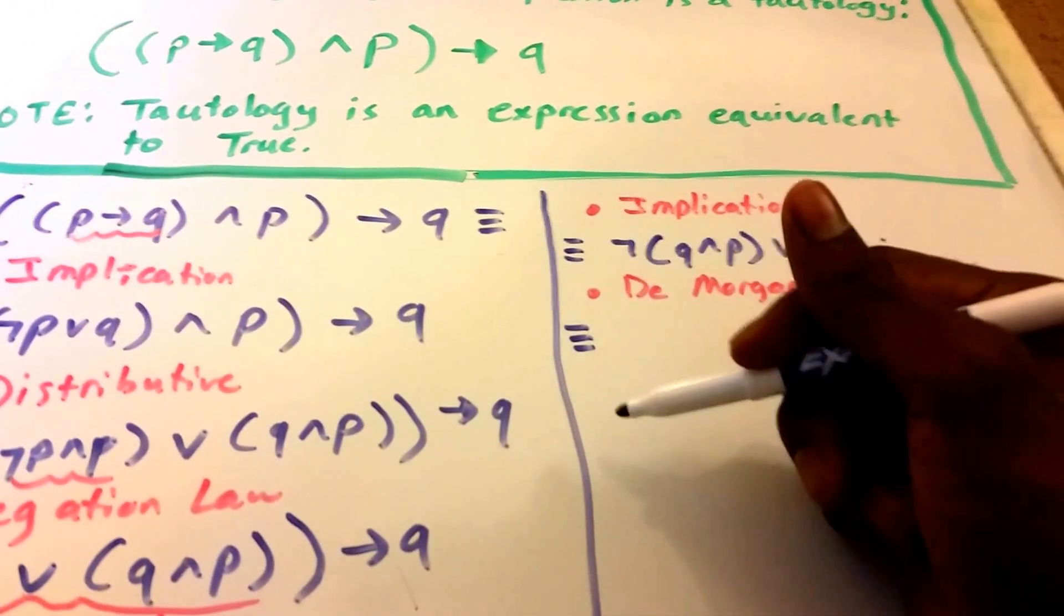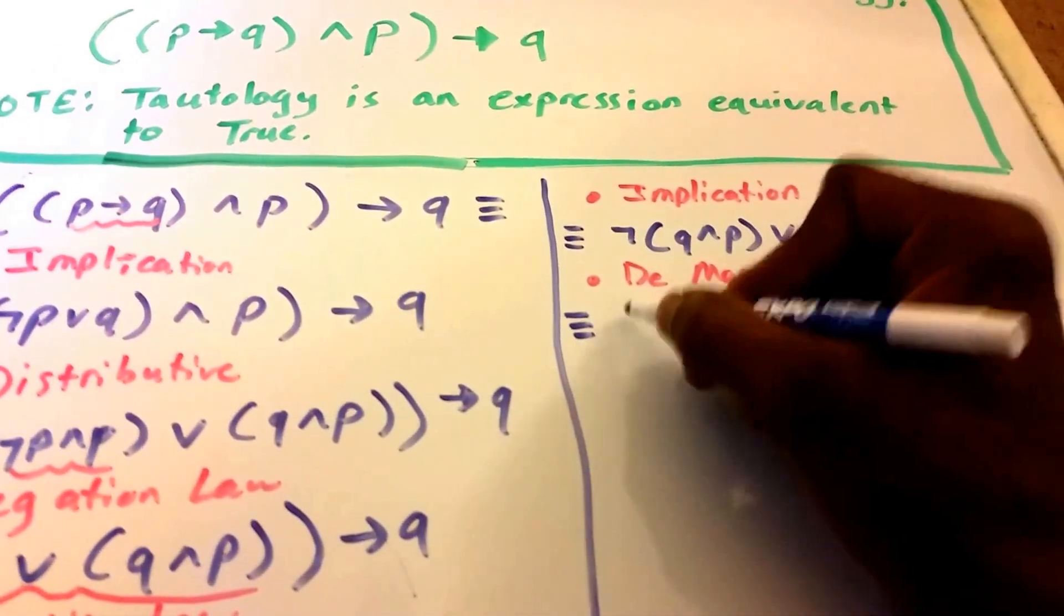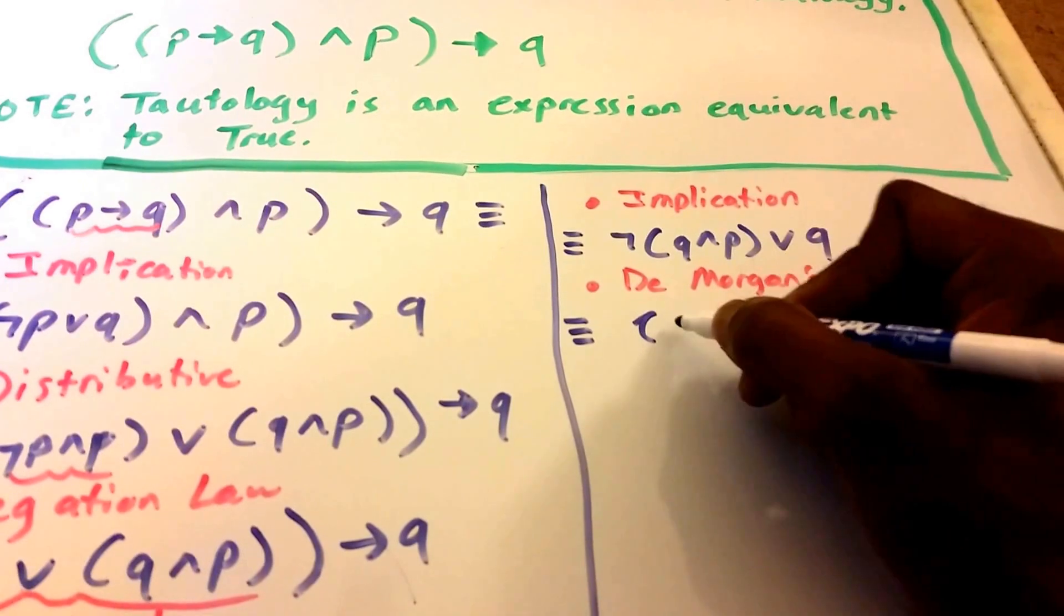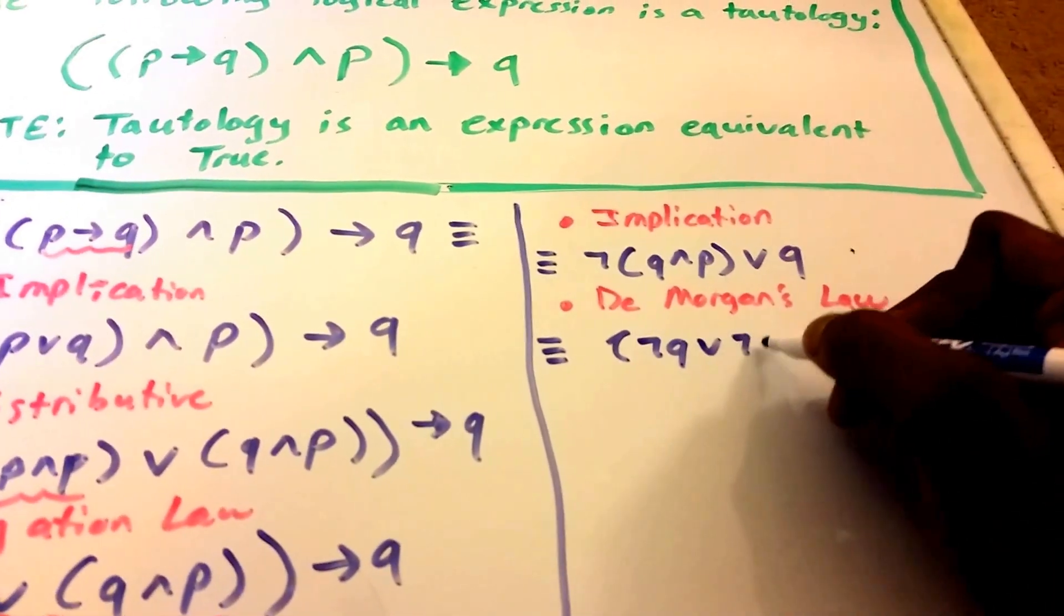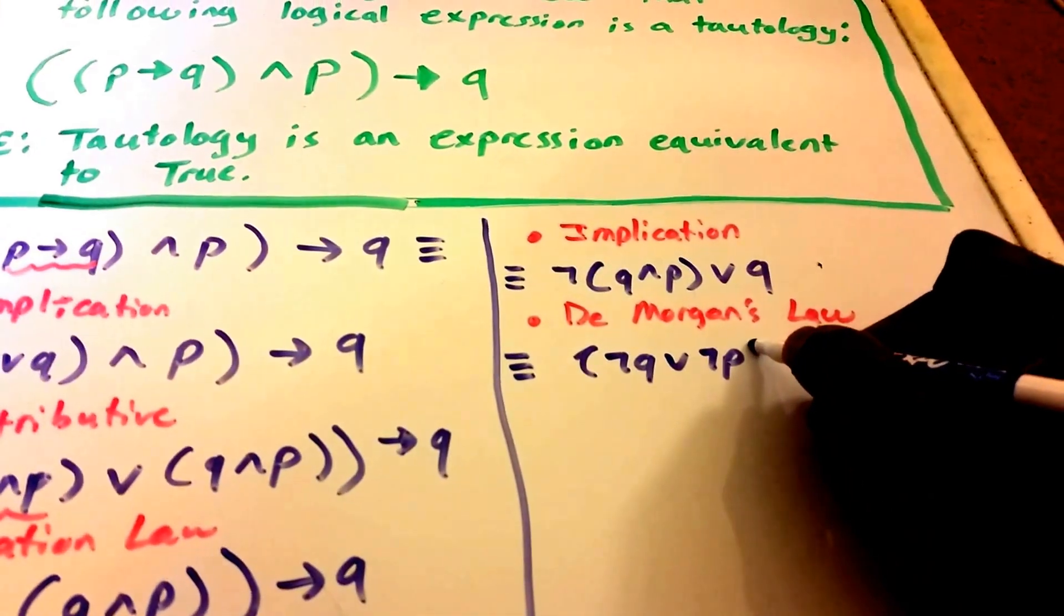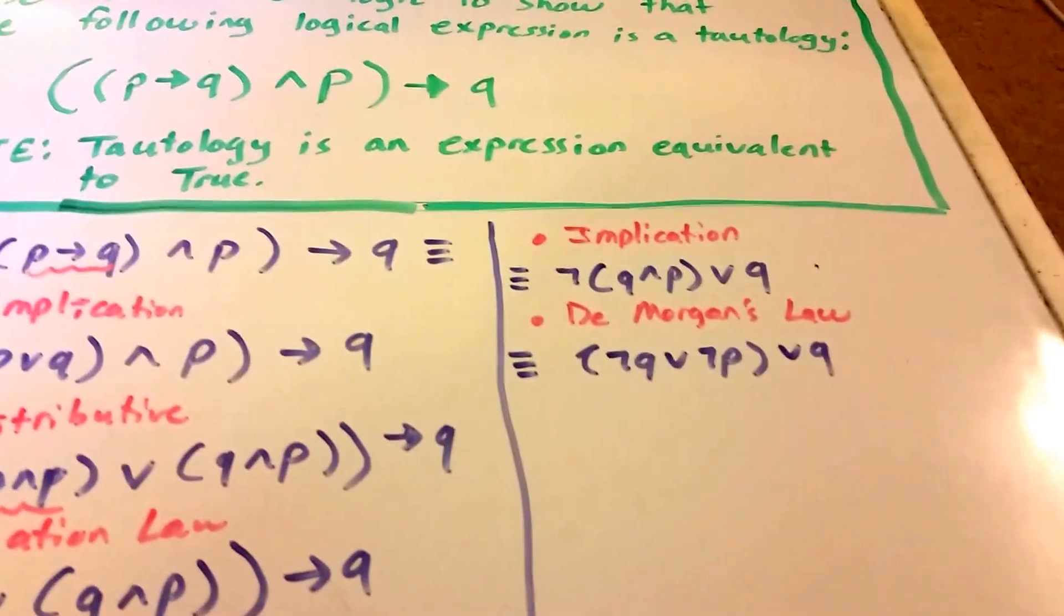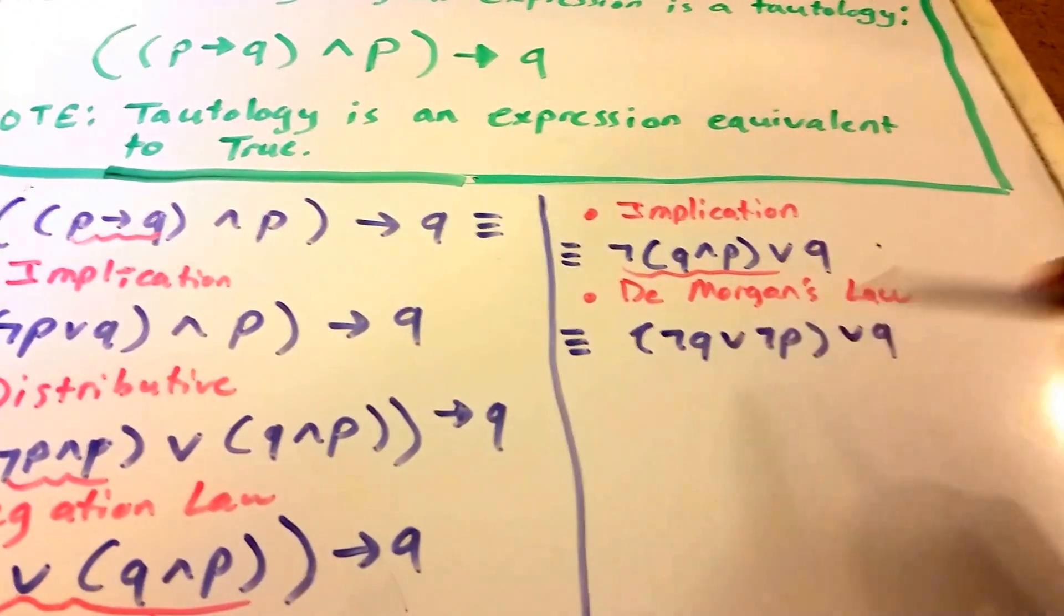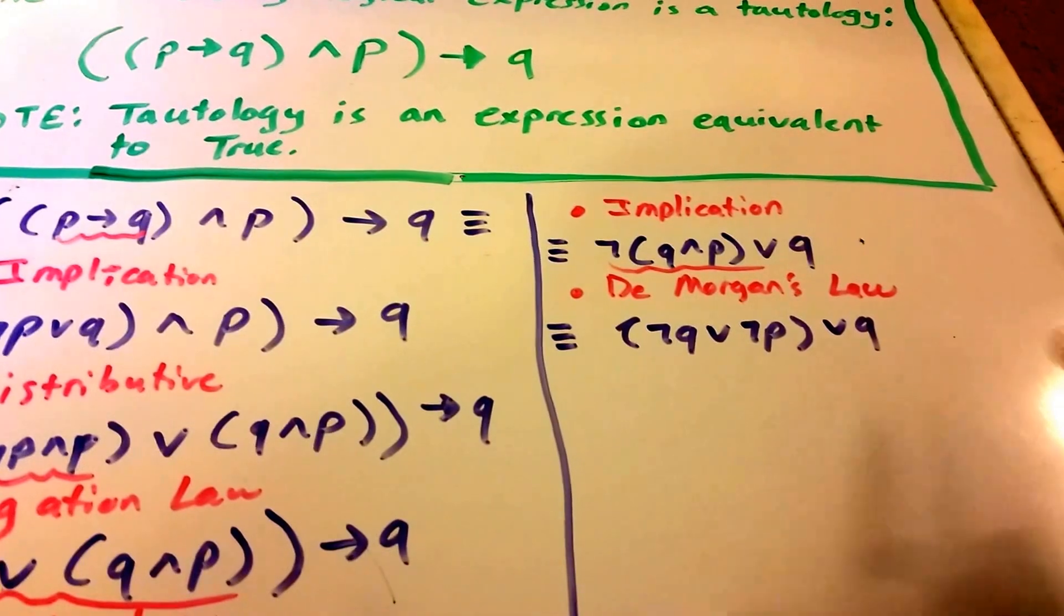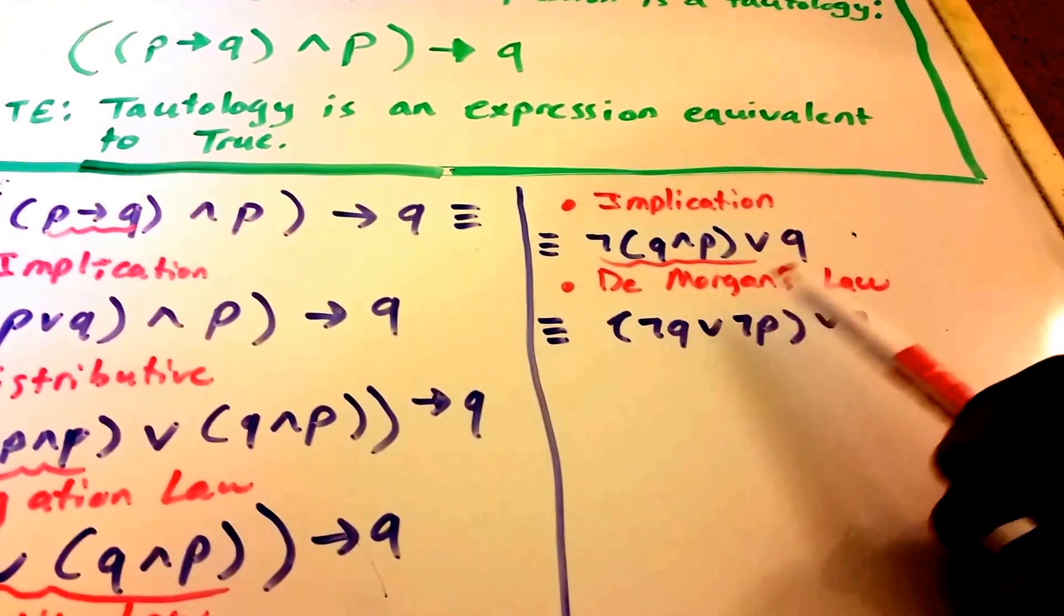And De Morgan's law will distribute that not of this expression. So what we're going to get is not Q or not P or Q. So you can see this expression was just distributed. So let's see what other law we would use here.